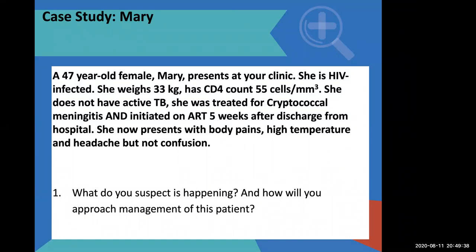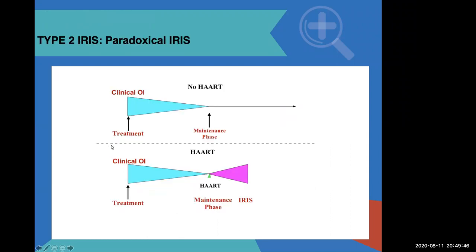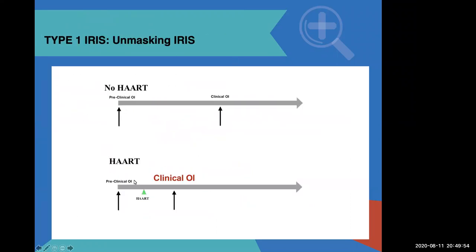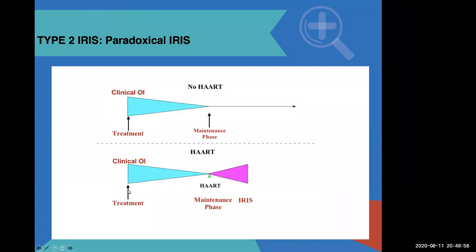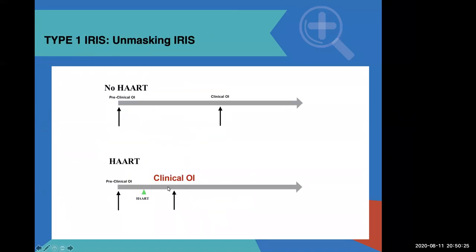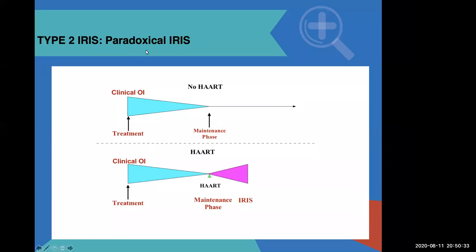Around 23% said it's unmasking and 77% said it's paradoxical. Remember: this patient had a known diagnosis — crypto. She was treated, symptoms disappeared, started on ARVs, and now the symptoms are back. That is paradoxical. Based on how she presents with a headache, it's probably paradoxical IRIS. And remember, with paradoxical IRIS you always have to exclude other things. Once you have excluded all these, then you say it's paradoxical IRIS.